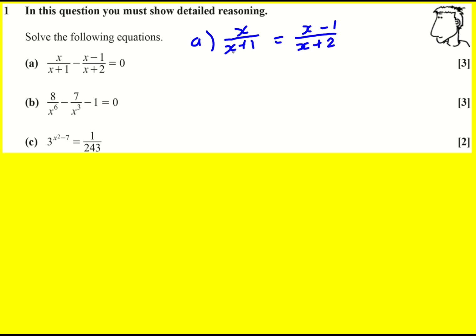And then do some of what we call cross multiplying, which is essentially the same as times in both sides by x plus 1 and x plus 2.